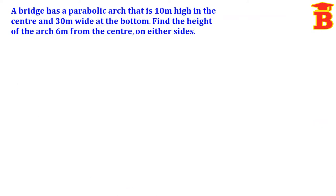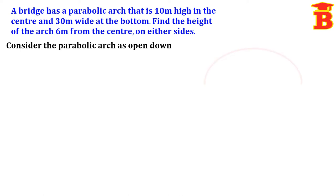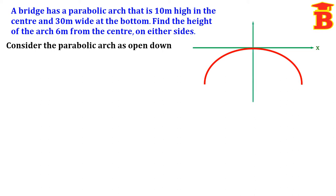See the next problem. A bridge has a parabolic arch that is 10 meters high in the center and 30 meters wide at the bottom. Find the height of the arch 6 meters from the center on either side. Here also, we consider the parabolic arch as open downward. The parabolic arch is 10 meters high in the center, and 30 meters wide at the bottom, so this horizontal distance is 30.